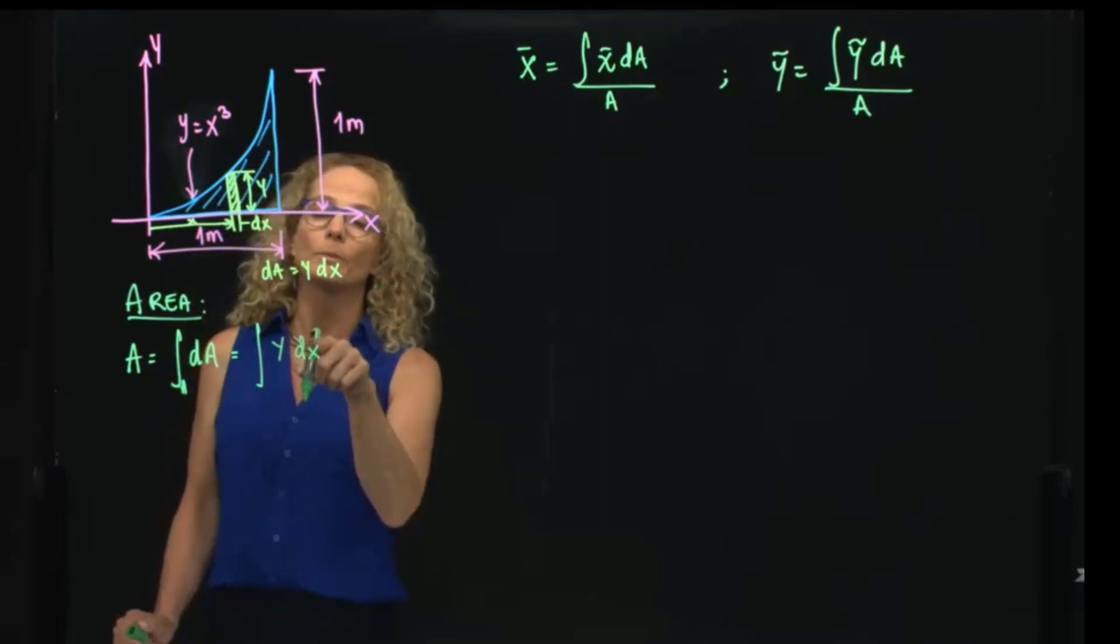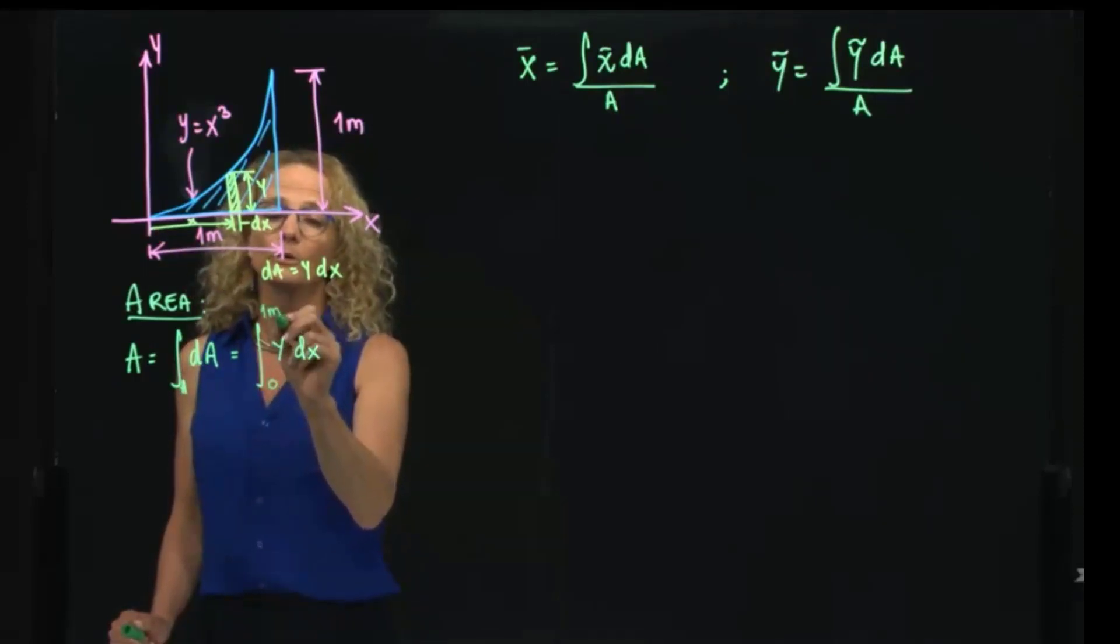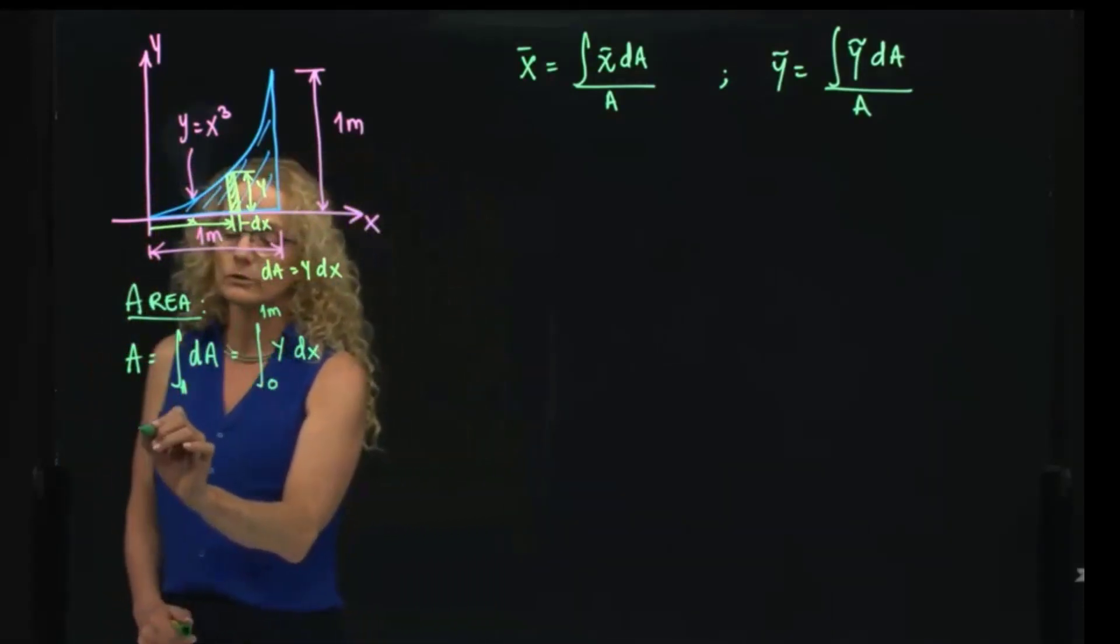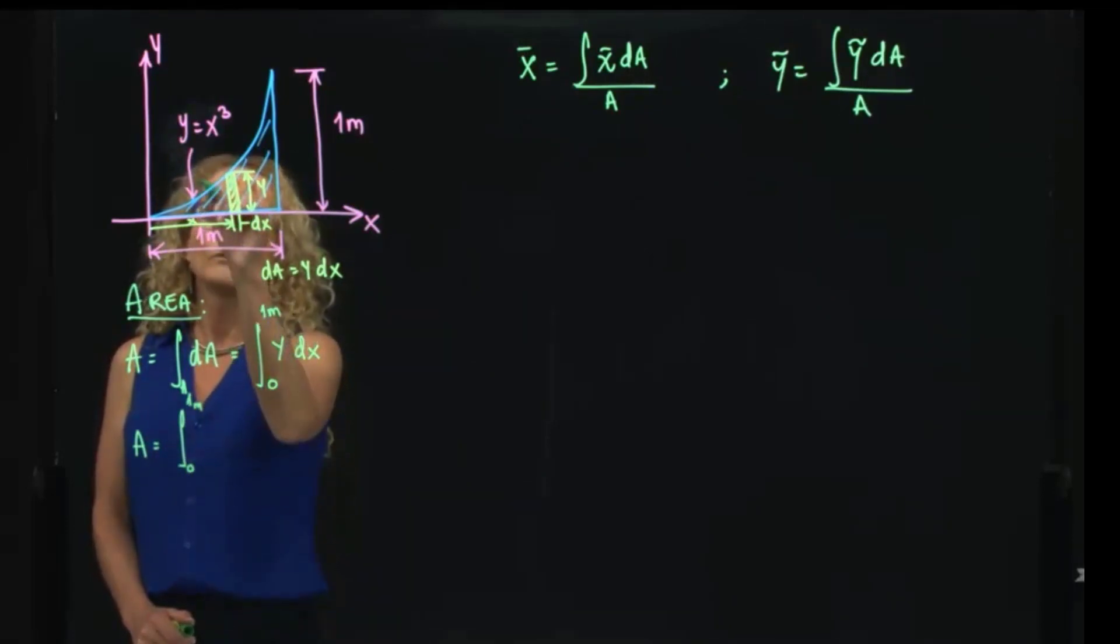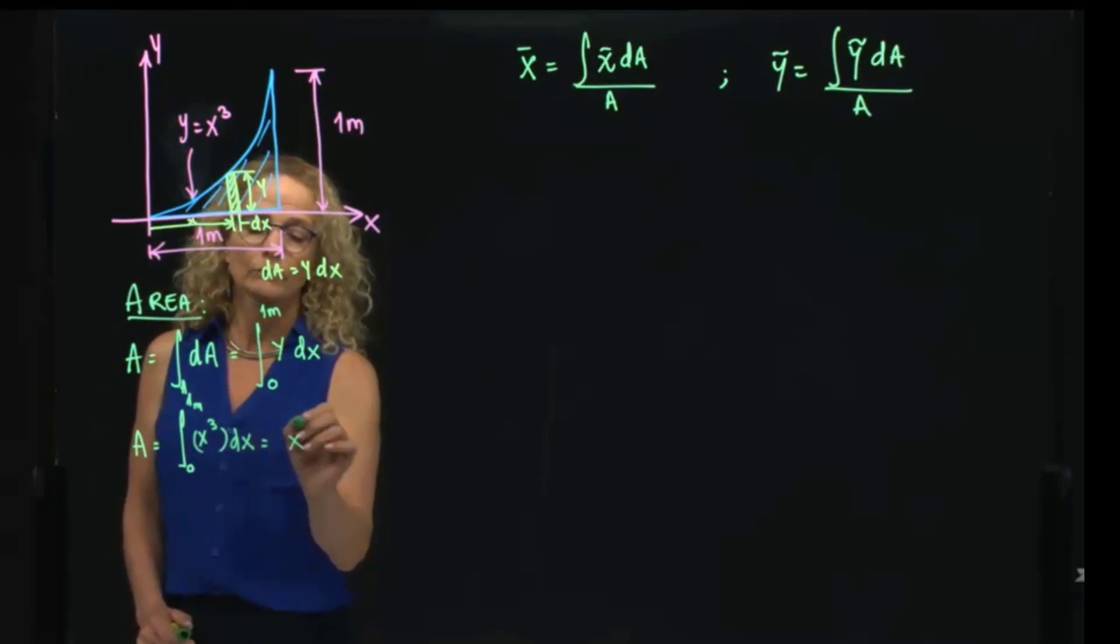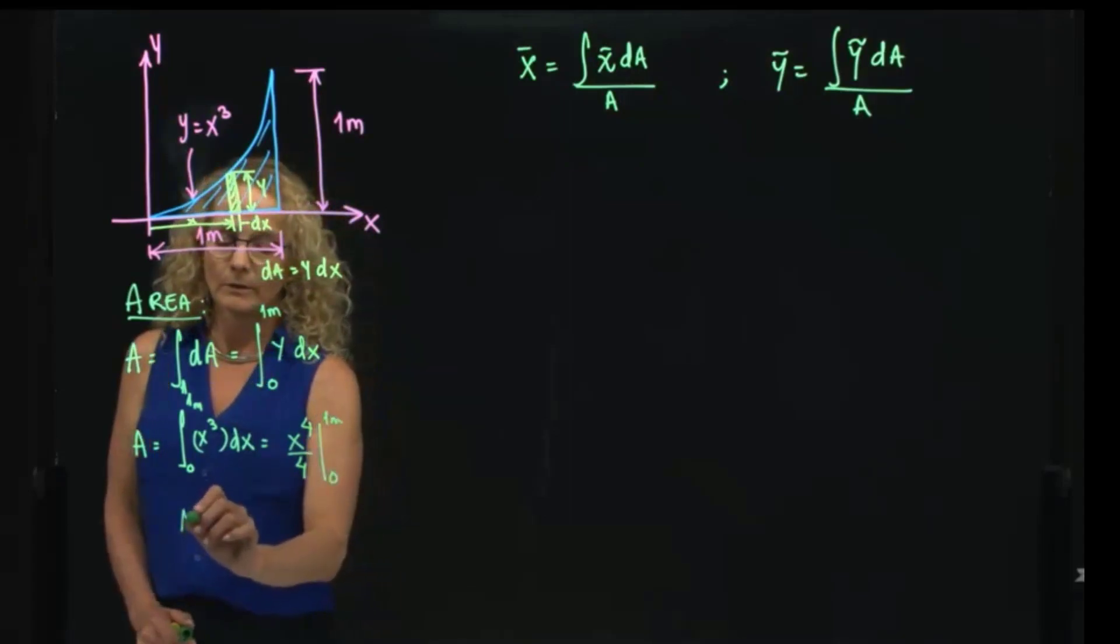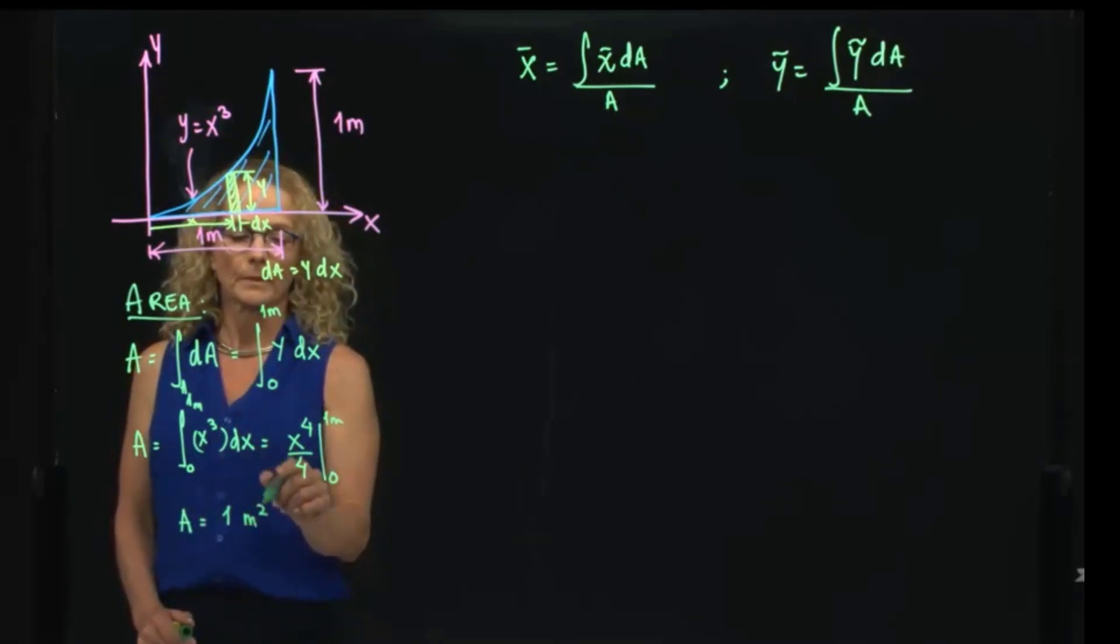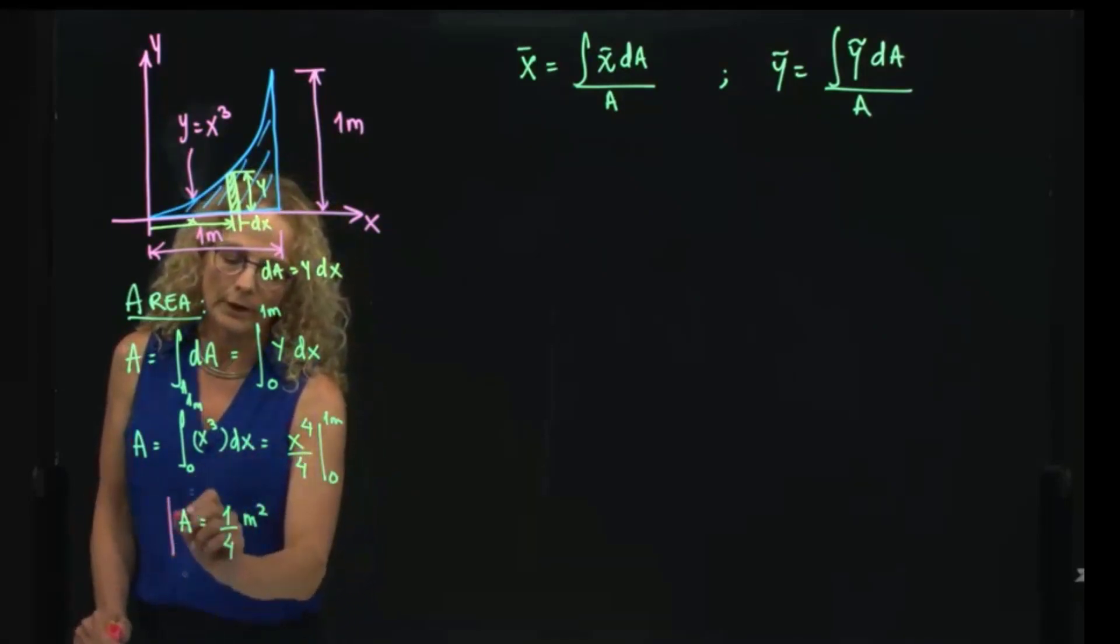So my limit of integration will be from the variable that I chose to integrate, which is x, and that will be from 0 to 1 meter. I have to put y in terms of my variable integration. Therefore, this is the integral from 0 to 1 of x cubed dx. That equals x to the 4 over 4 evaluated at 0 and 1 meters. Therefore, my area is 1 fourth meters squared.